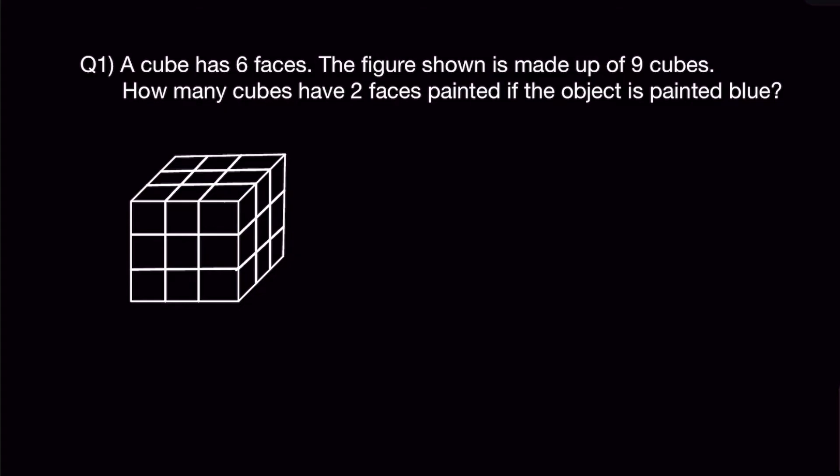How we can do this question is to look at individual layers. You'll notice that for the first and the third layer, if we draw it out, you can find that there will be this cube here, this cube, this cube and this cube with two faces painted.